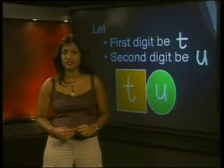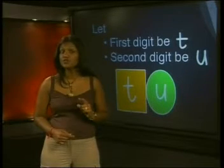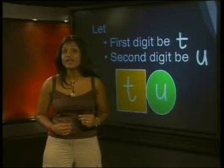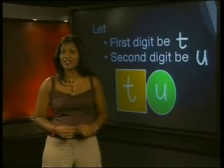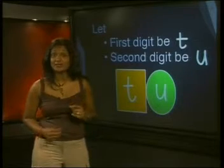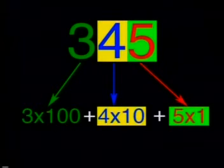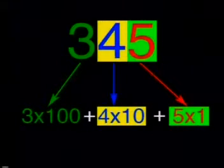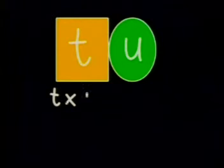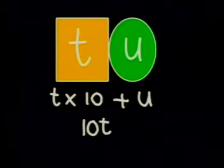Let's try to set up a second equation. What else do we know about this number TU? Be careful — TU does not mean T times U; it is representing one number with two digits. This rectangle represents the tens and this oval represents the units. What is the actual value of this number in terms of T and U? Remember that in 345 the digit 4 represents 40. So how many tens do we have in TU? We have T tens, so the value of the number is T times 10 plus U, which we can write as 10T plus U.